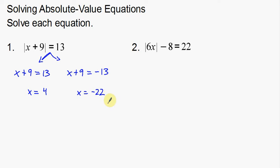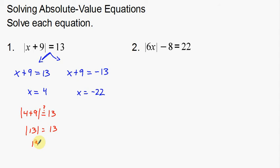If you're still a little confused, you can always plug these numbers back in to check. Let's take 4 and plug it back in: the absolute value of 4 plus 9 — is that going to equal 13? Well, 4 plus 9 is 13, and the absolute value of 13 is 13. So this does work.